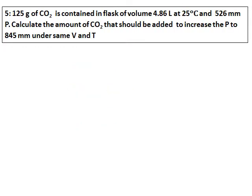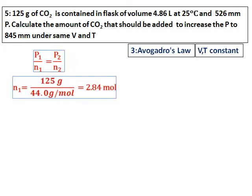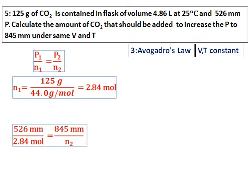Second Avogadro's law question: 125 grams of carbon dioxide is in a flask of volume 4.86 liters at 25 degrees Celsius and 526 mmHg pressure. Calculate the amount of CO₂ to be added to increase the pressure to 845 mmHg at the same volume and temperature. Since pressure relates to moles at constant volume and temperature, this is also Avogadro's law, using P1/N1 = P2/N2. N1 is not directly given, so calculate it by dividing the mass by the molar mass of CO₂. With N1, P1, and P2 known, solve for N2.